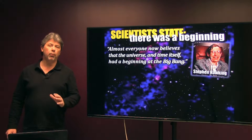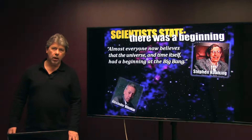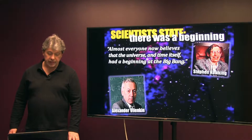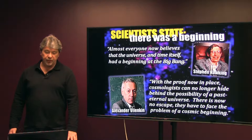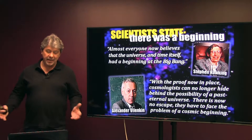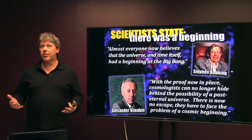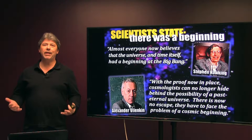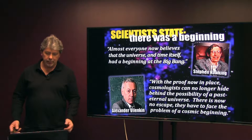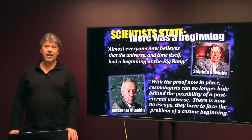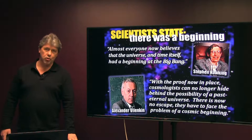Another atheistic scientist, Alexander Vilenkin, stated: 'With the proof now in place, cosmologists can no longer hide behind the possibility of a past eternal universe. There's now no escape — they have to face the problem of a cosmic beginning.' Before it was established scientifically that the universe had a beginning, atheists took great comfort in the idea that the universe was eternal — a static state with no beginning. If the universe always was, there would be no need for a beginner. Now scientists are admitting they must deal with this problem of a cosmic beginning, because it always infers, at the very least, a beginner.